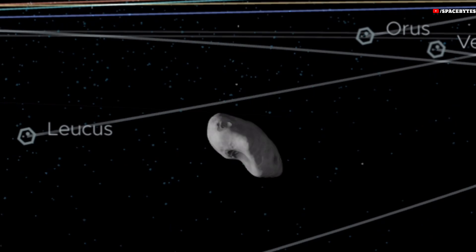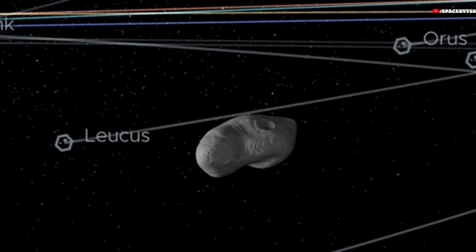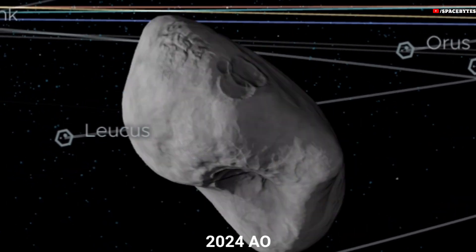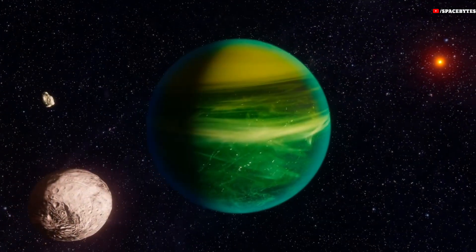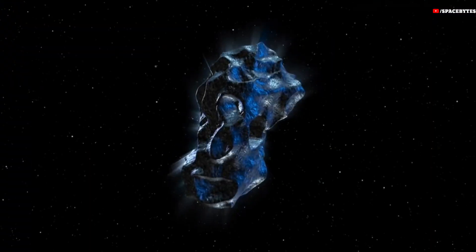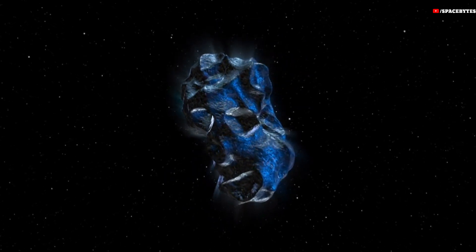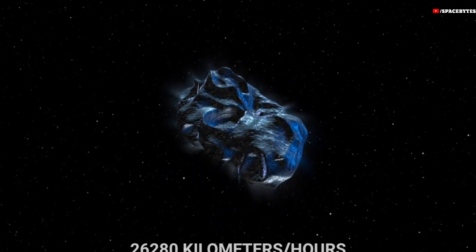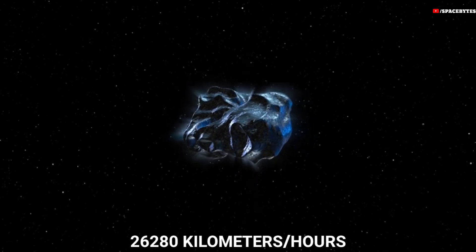The second asteroid to pass Earth on February 16th has been designated as Asteroid 2024 AO by NASA. It is expected to pass Earth at a distance of 3 million km. As per NASA, it is traveling in its orbit at a speed of 26,280 km per hour.